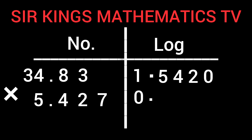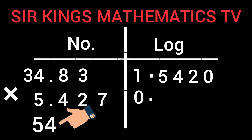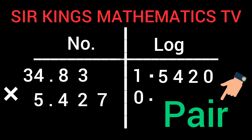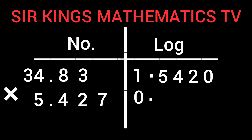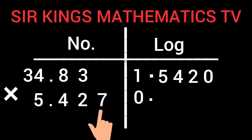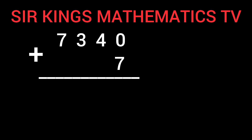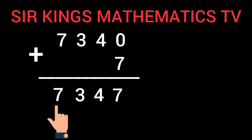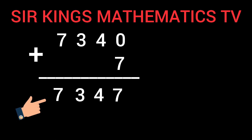Now let's find the mantissa using our four-figure table. For 5.427, we call it 54 in the table — the reason is because the number you take to the four-figure table must be in a pair. From the table: 54 under 2 gives us 7340. The difference for 7 gives us 7. Adding 0 plus 7 gives us 7. Bring down 4, bring down 3, bring down 7. We have 7347 as the mantissa. Write it down here.